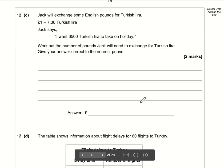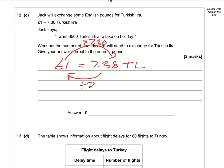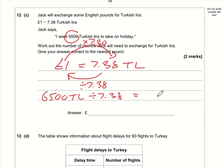Question: the conversion rate is £1 equals 7.38 Turkish lira. To convert from pounds to lira, multiply by 7.38; going the other direction, divide by 7.38. To convert 6500 Turkish lira to pounds: 6500 divided by 7.38 gives approximately £880.75.